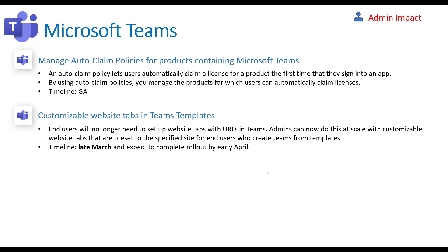The next one is if you use Teams templates — they allow you to set up apps and configurations as a template that you can recreate over and over again for duplicate efforts in your Teams channels. With this addition, you can now add URLs to the Teams channel, so if a company always wants their SharePoint site as one of the tabs, you can now do this as part of templates, reducing your steps as an admin. This will happen in late March and be done by early April.